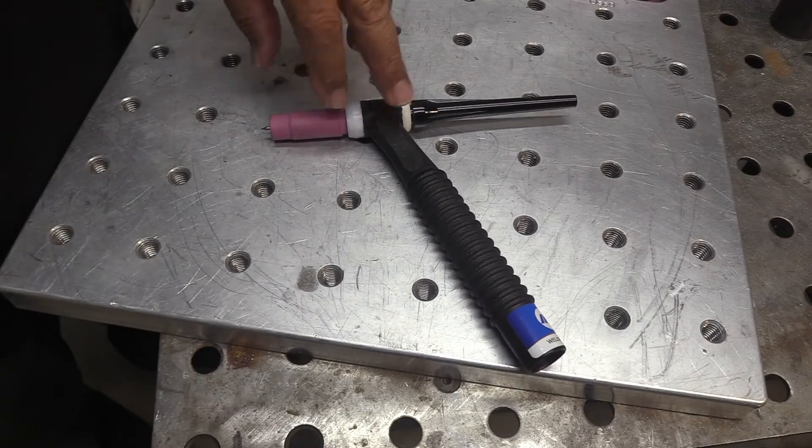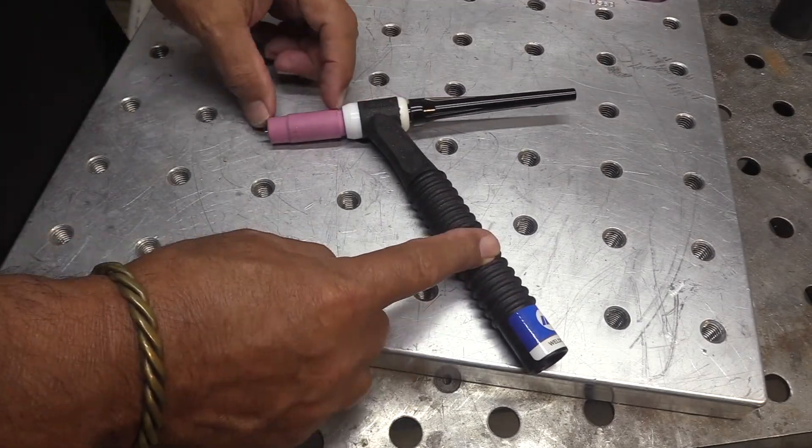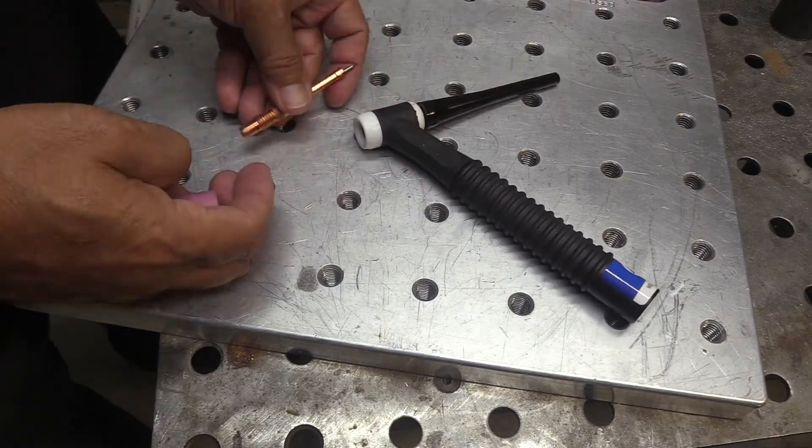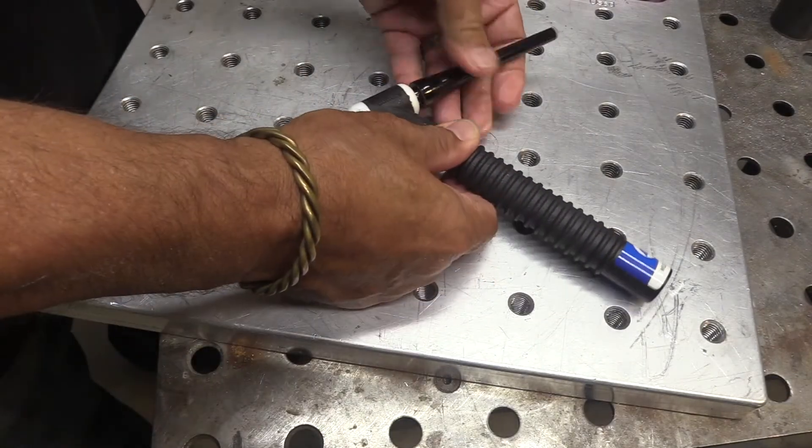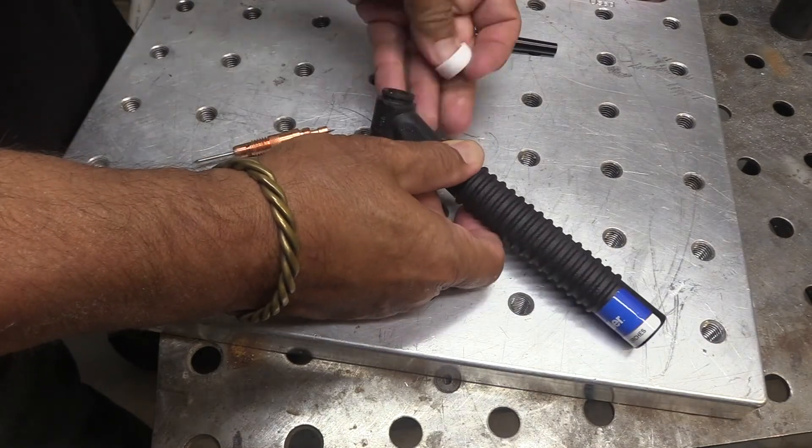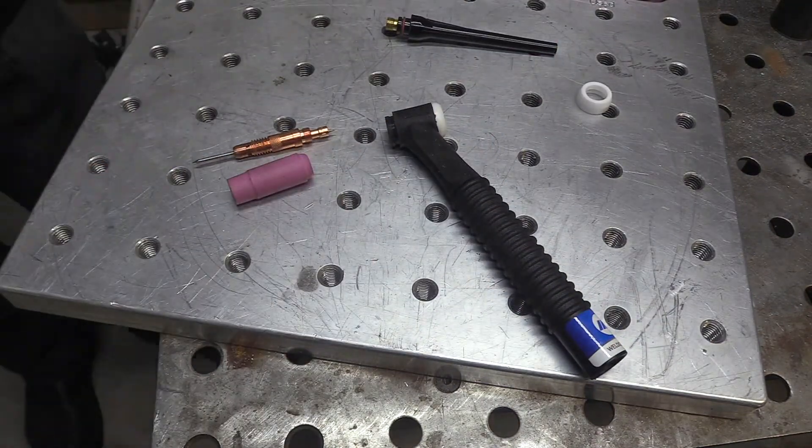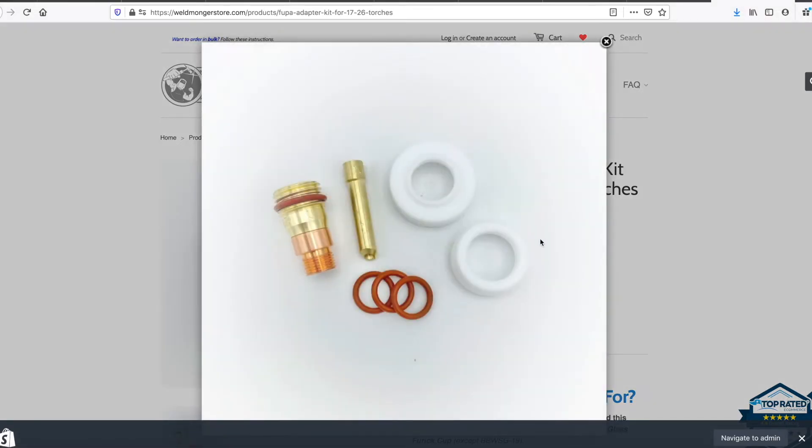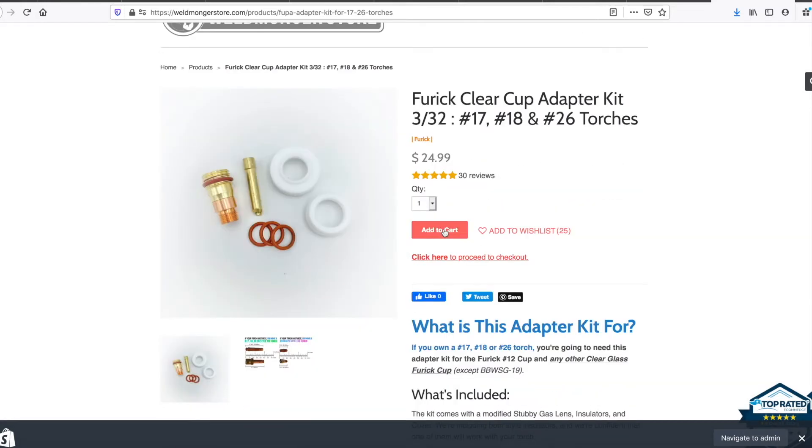Here's a little piece to help you know what style torch you have so you get the right stuff. This is a 17 air-cooled torch it's one of the most common torches out there. Water-cooled 18s and 26 style torches use the same collet body and hardware. If this looks like your torch you'll probably need this adapter kit this is the cheapest way to make the Jazzy 10 work with that style torch. There are other ways also and I'll show you that in just a second.